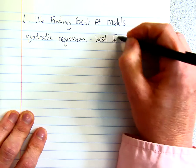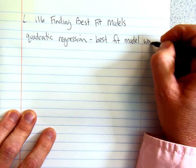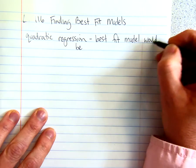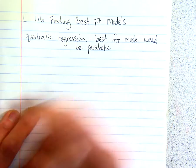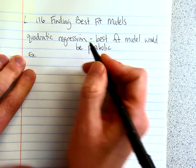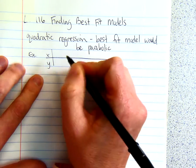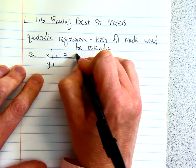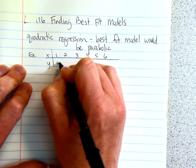So basically, this is a best fit model that would be parabolic. In other words, a parabolic shape. Here's an example. If you type these numbers into your calculator, so if these are your points,